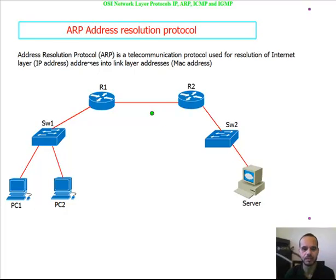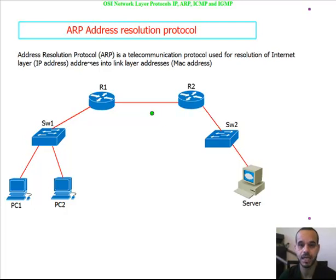Hello and welcome. In the previous video we talked about the transport control protocol, or the fourth layer of the OSI model. In this video we will talk about the network layer and its protocols, mainly the ARP and ICMP.